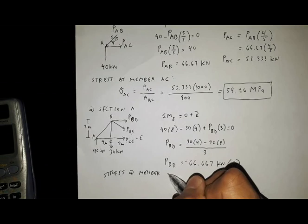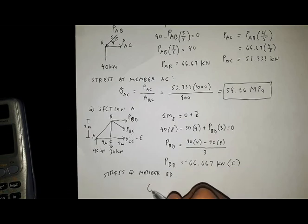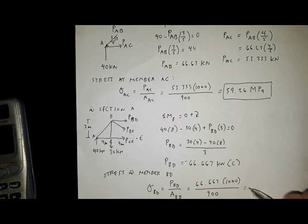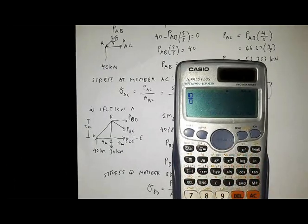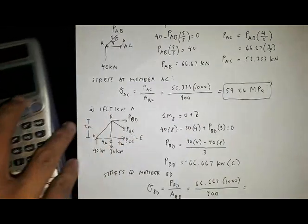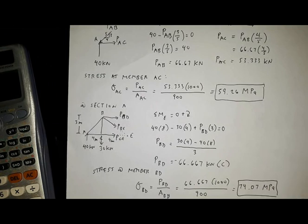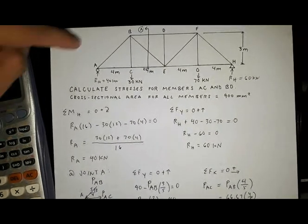For the stress at member BD: σ_BD equals the force at BD divided by the area of BD. Substituting: 66.667 times 1,000 divided by 900, giving a stress of 74.677 megapascals.